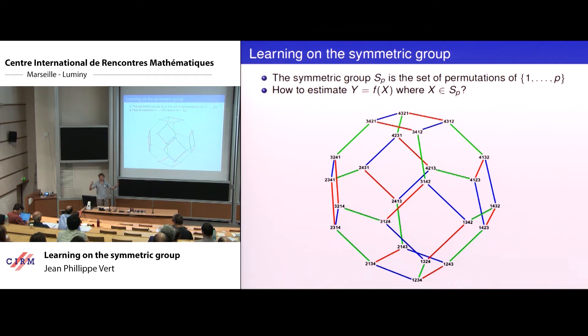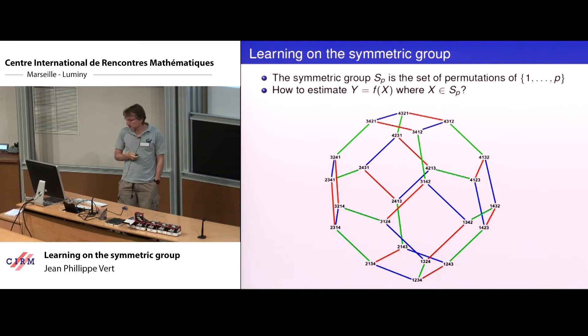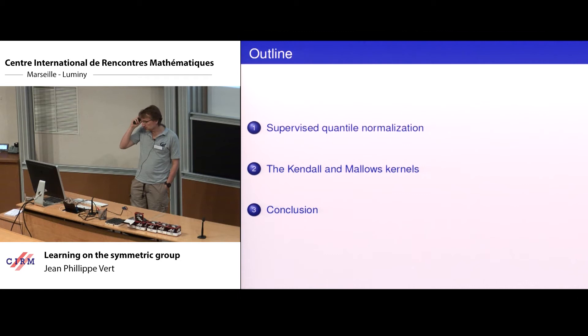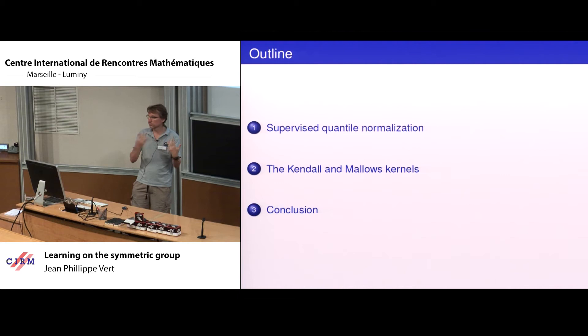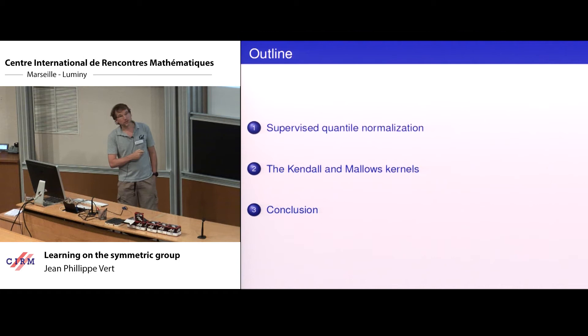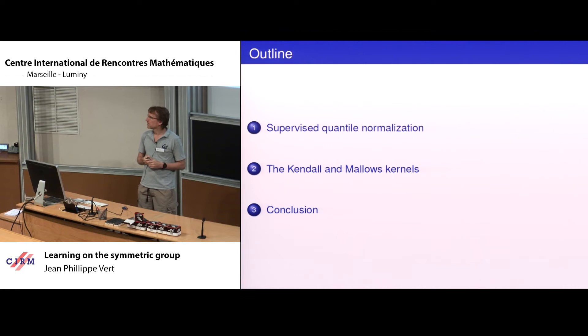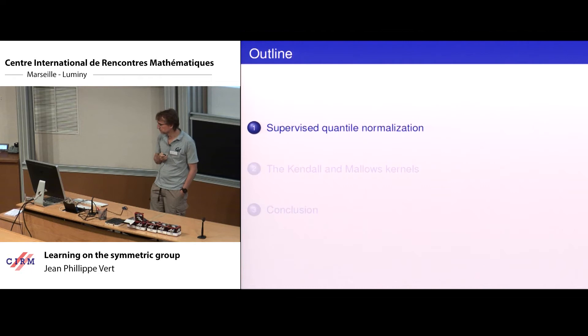Among this large discrete space, we observe 200 samples and want to relate them to some Y value. The rest of my talk will be about two ways we investigated recently to formalize this and build models on the symmetry group—where mathematically the input x is a permutation, y is some output, and you want to run a model. I'll talk about supervised quantile normalization, and if I have time, kernels and positive definite kernels on the symmetric group.